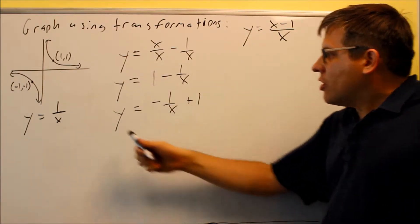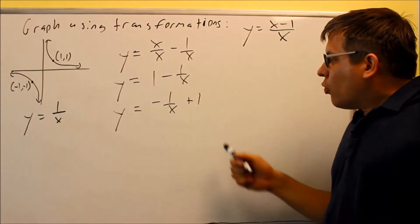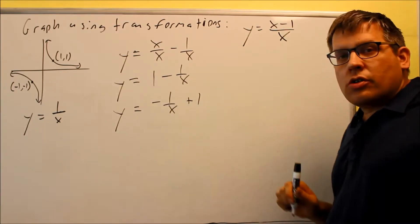This is still using the same base graph of 1 over x because we actually see that one right here. We're going to move it up one unit, and we're also going to do a flip.